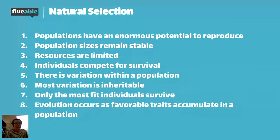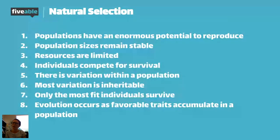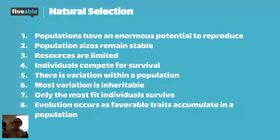Most variation is inheritable, so the variation we're seeing can be passed down to offspring. If it's not able to be passed down, it can't contribute to natural selection because it will die within that generation. Only the most fit individuals survive — on the AP exam they're not a fan of the phrase 'survival of the fittest.' It's more accurate to say that organisms more capable of survival and reproduction will survive and reproduce, and their offspring will inherit those traits.